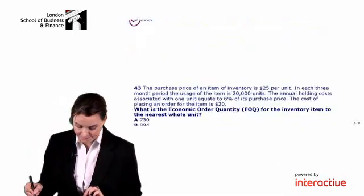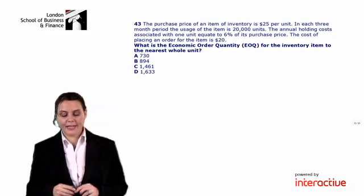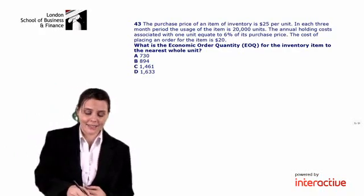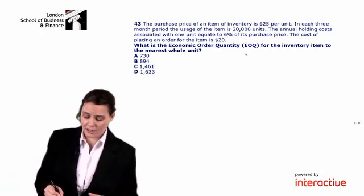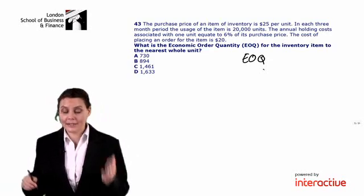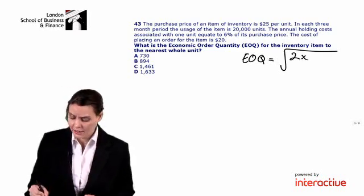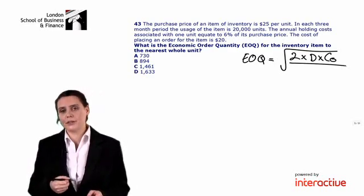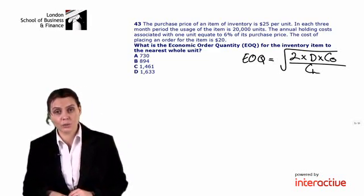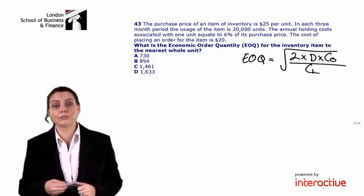One more question in this area: what is the economic order quantity for the inventory item to the nearest whole unit? You should be happy if you see a question like this in the exam, because the EOQ formula is given to you on your formula sheet. The EOQ equals the square root of 2 times demand times cost of ordering, divided by cost of holding.